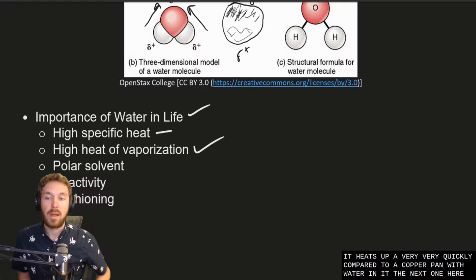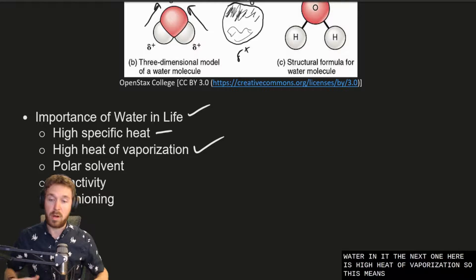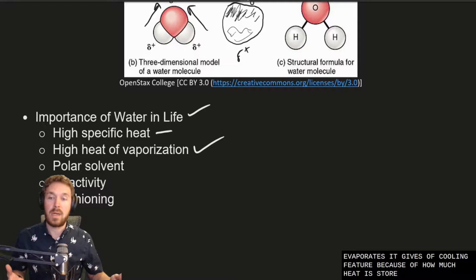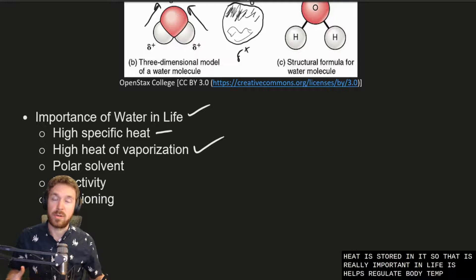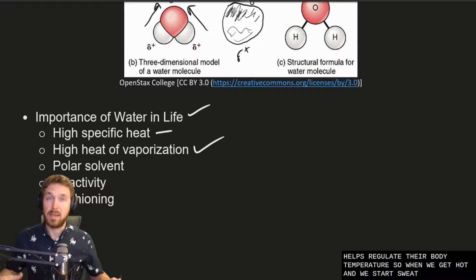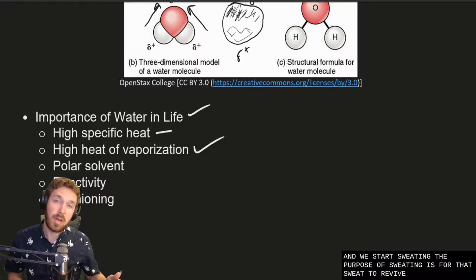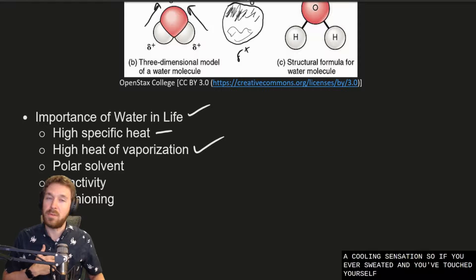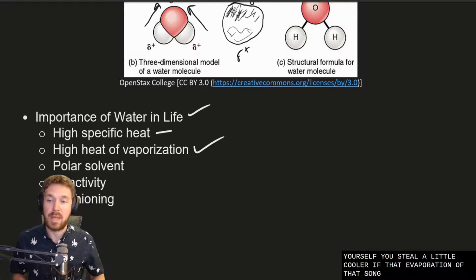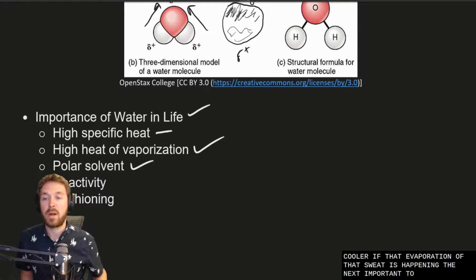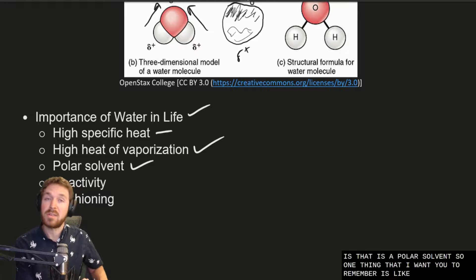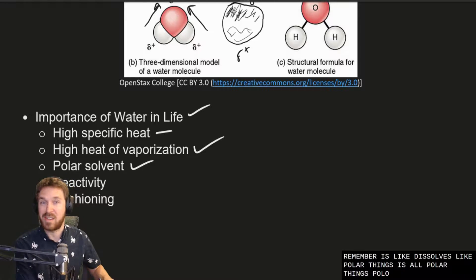The next one here is high heat of vaporization. So this means when water evaporates it gives a cooling feature because of how much heat is stored in it. So that is really important in life. It helps regulate our body temperature. So when we get hot and we start sweating the purpose of sweating is for that sweat to evaporate and give us a cooling sensation. So if you ever sweated and you've touched yourself you feel a little colder if that evaporation of that sweat is happening. The next important feature of water is that it's a polar solvent. So one thing that I want you to remember is like dissolves like. Polar things dissolve polar things. Polar things include salts. So sodium chloride, calcium, calcium chloride, things like that.